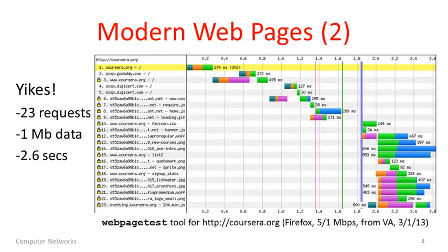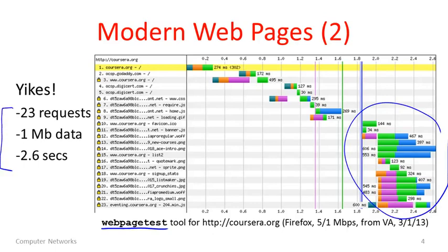Here is the full picture for downloading the Coursera page using the same settings with the Web Page Test tool. There's actually a lot of activity after the document complete — probably loading many pictures, other things, and scripts. The whole web page is comprised of 23 requests, around a megabyte of data, and it takes 2.6 seconds with nothing cached. It's shorter if you do a repeat load with some things cached. Moreover, this is not a terribly complicated web page — it's not unusual to see 50 or even 100 requests on many web pages.